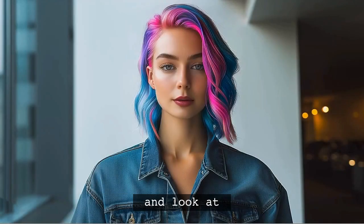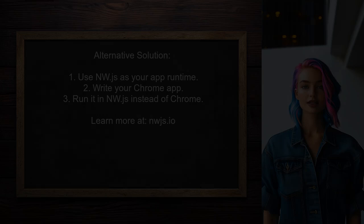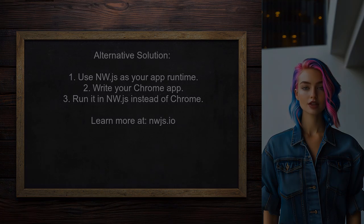Another alternative approach is to use nw.js as the runtime for your app. This allows you to write your Chrome app and access the Chrome.serial API, but instead of running it in Chrome, you run it in the nw.js executable.